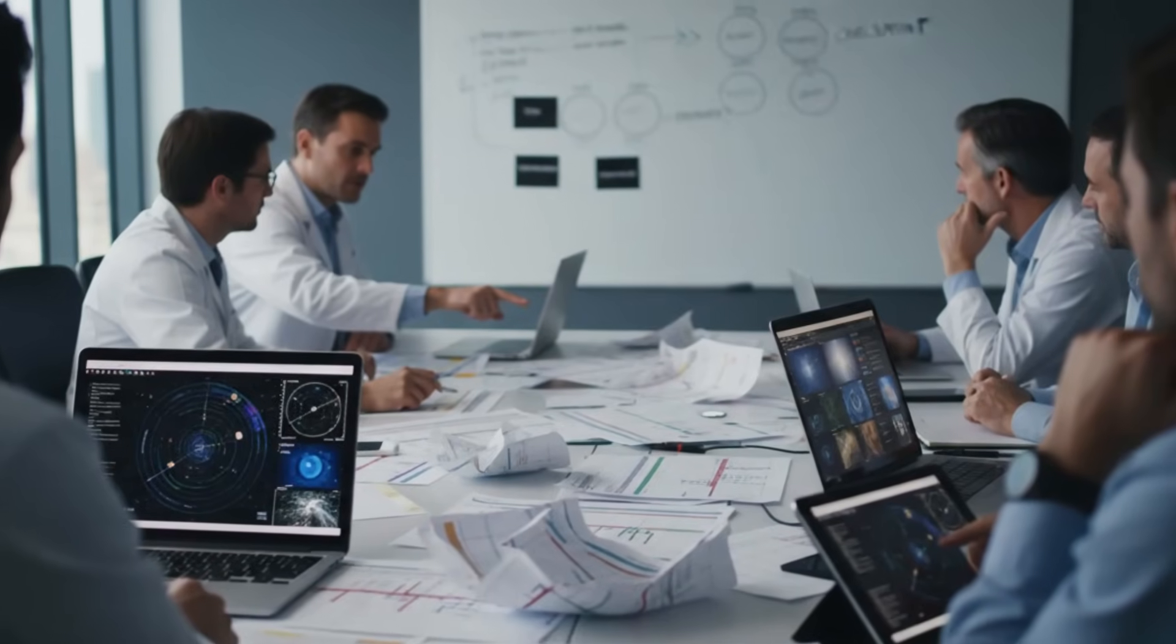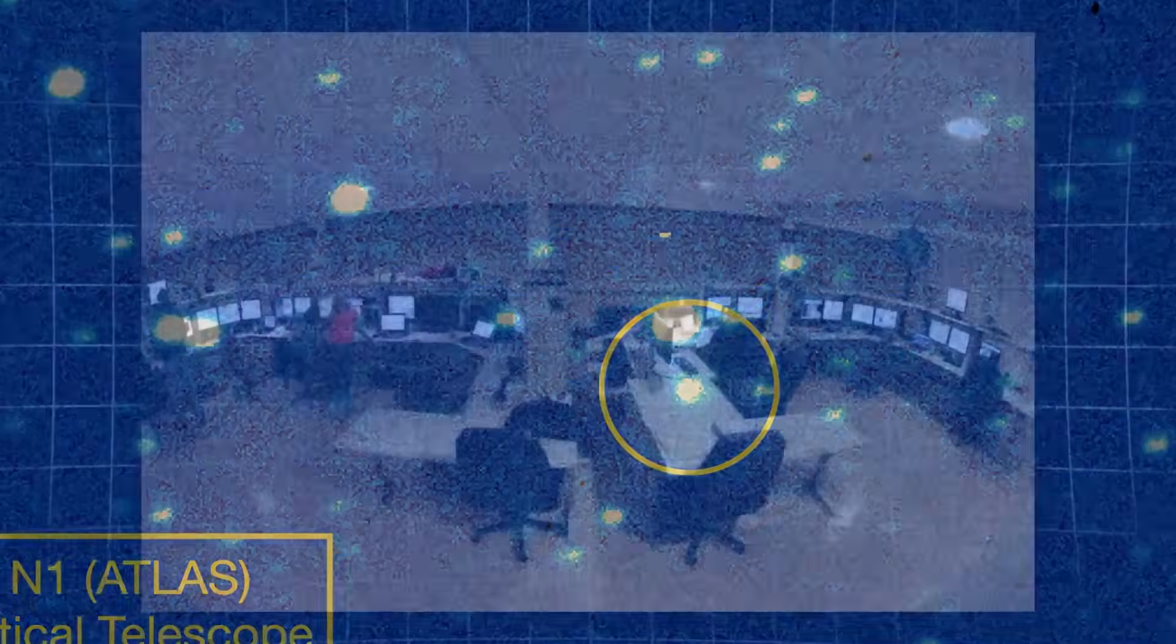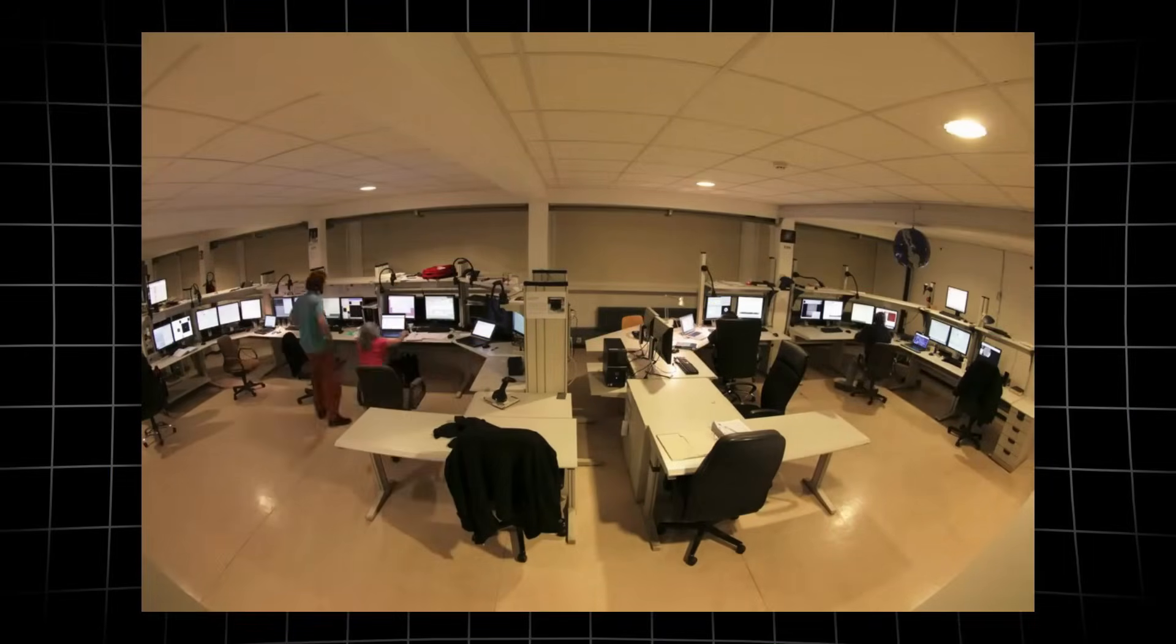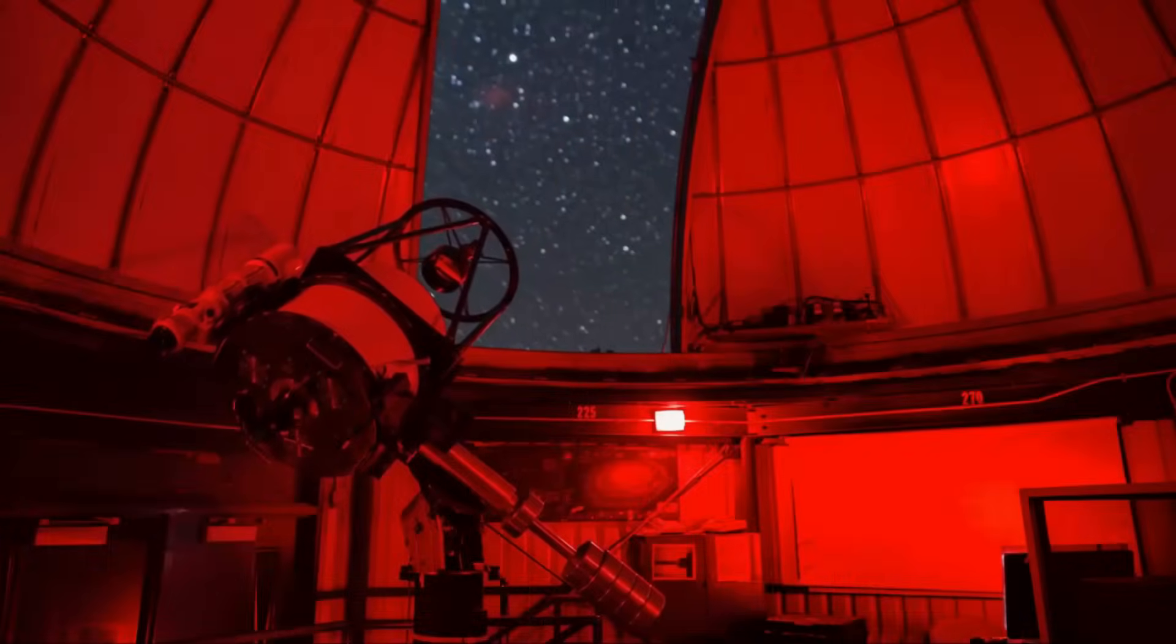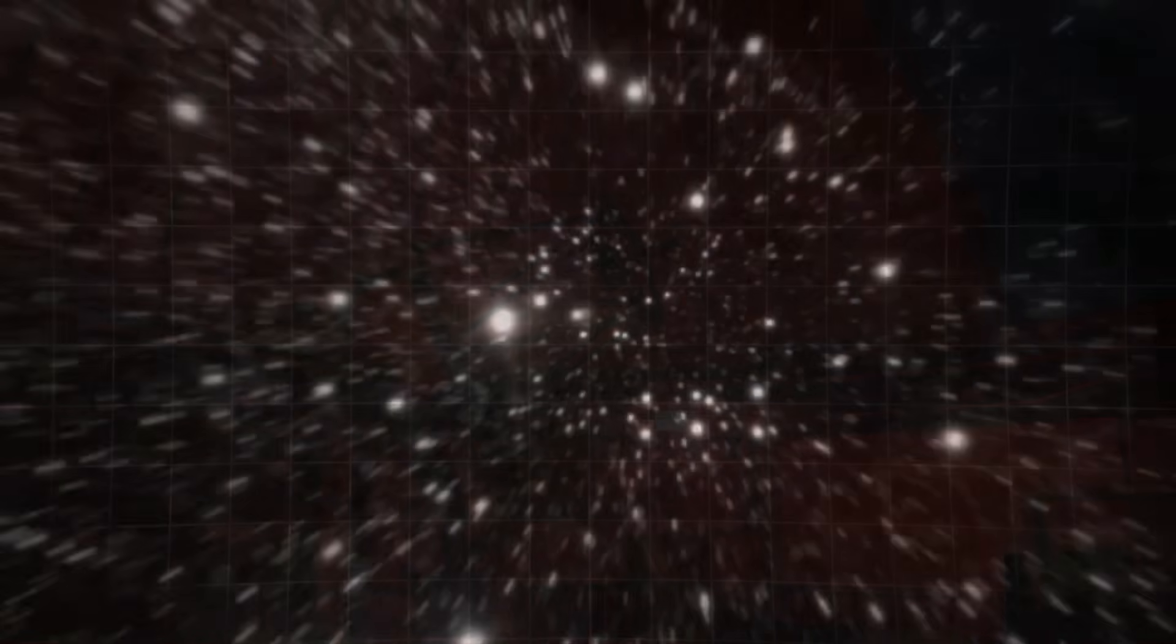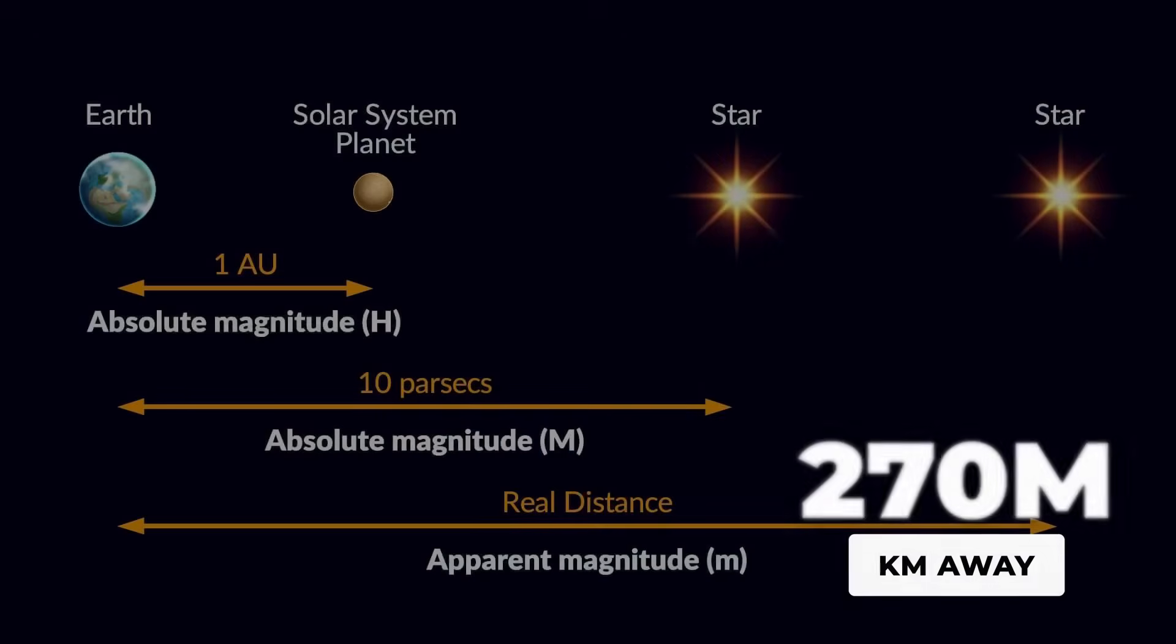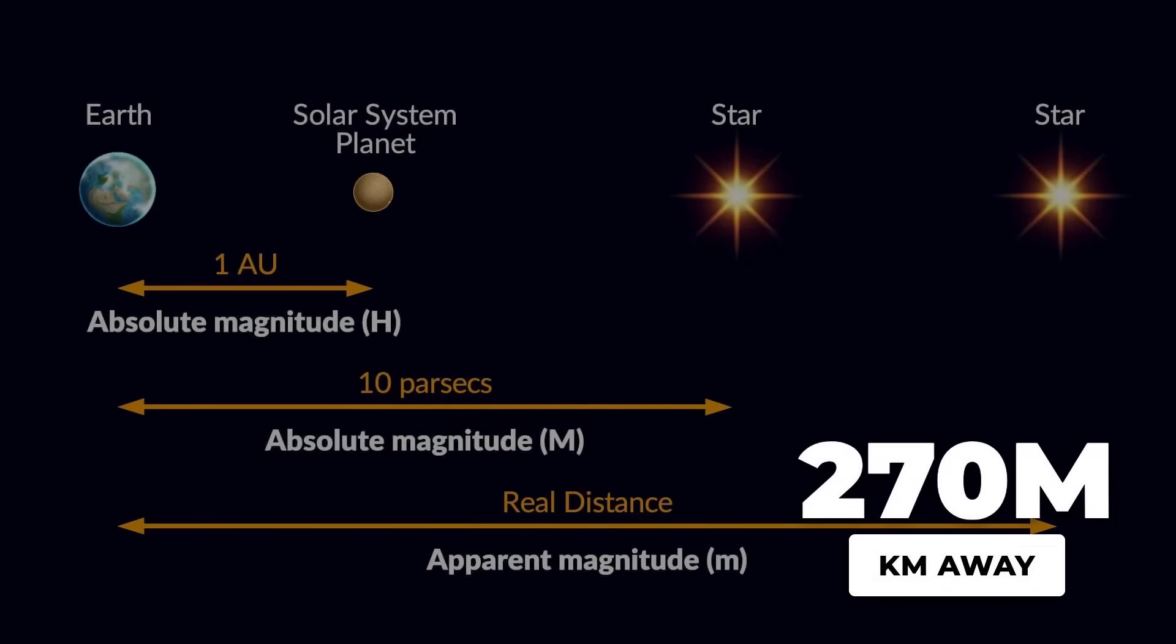Three key checkpoints now define the global watch on 3i-Atlas. First comes the moment of truth after perihelion. In early December 2025, astronomers will search for the object as it reappears from behind the sun.